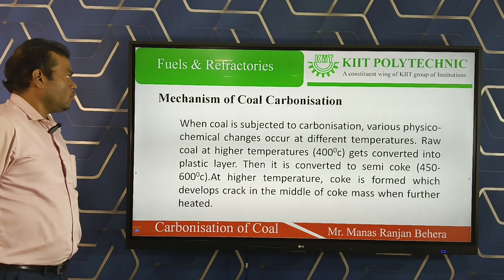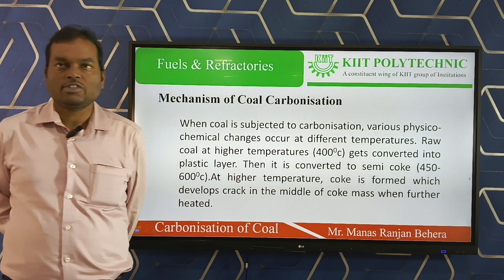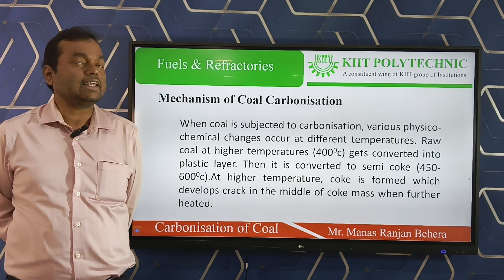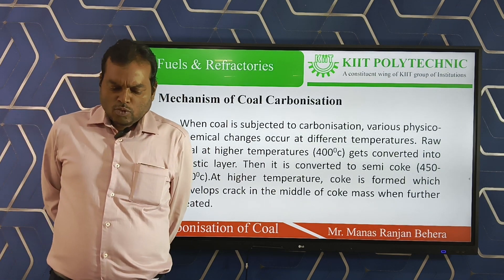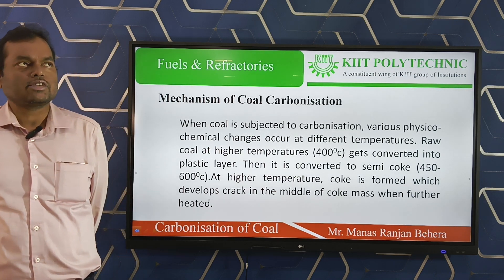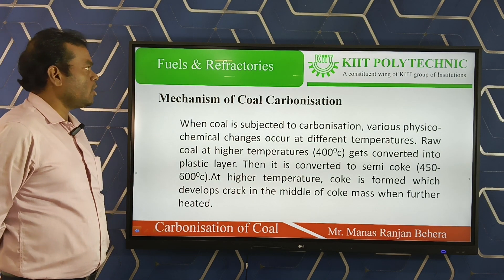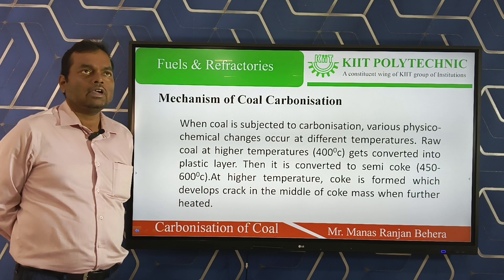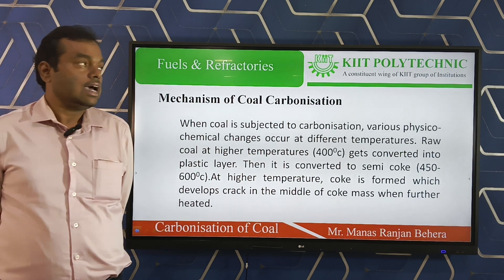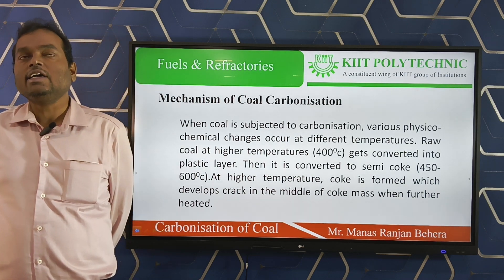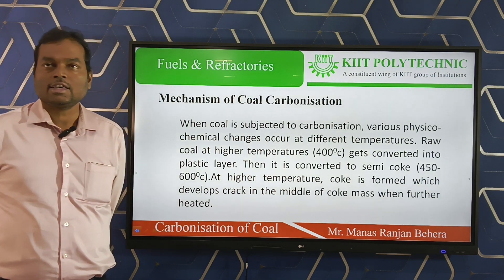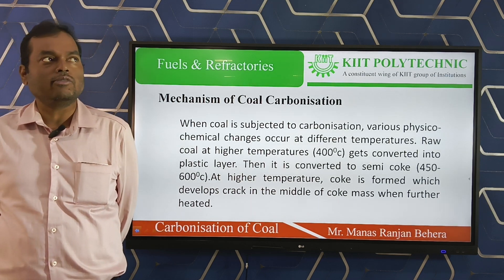Now we go to the most important part of this topic: the mechanism of carbonization — how coke is formed by heating coal. When we start heating coal in the absence of air at around 100 degrees centigrade, the moisture present inside the coal is removed. As we increase the temperature to around 270 degrees centigrade, other gases and H₂S gases are also removed from the coal.